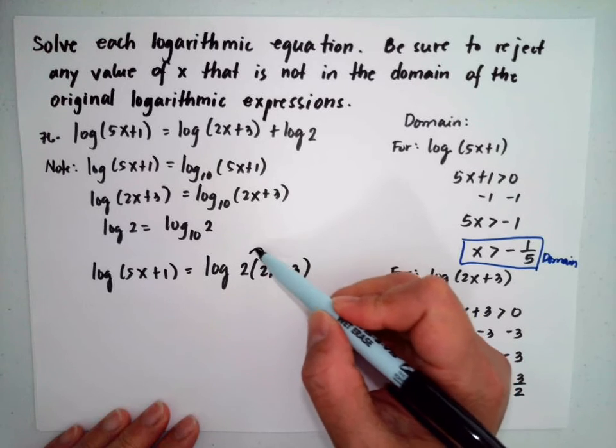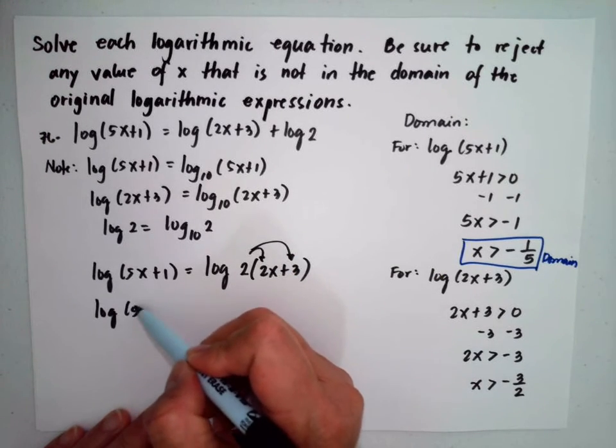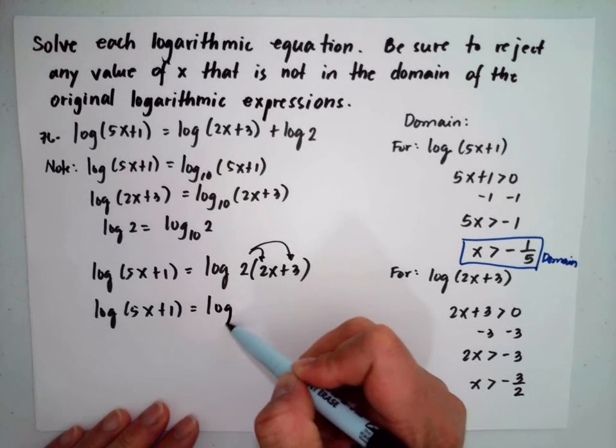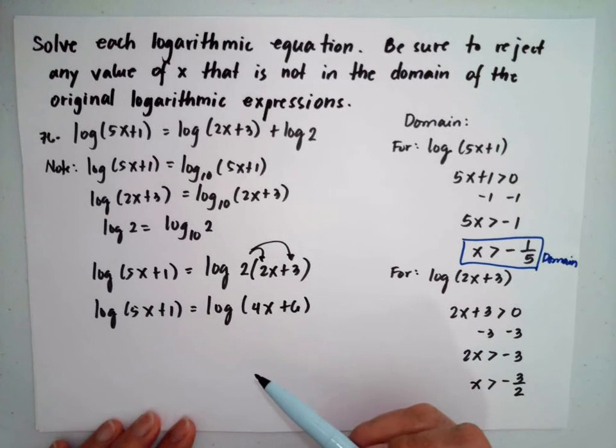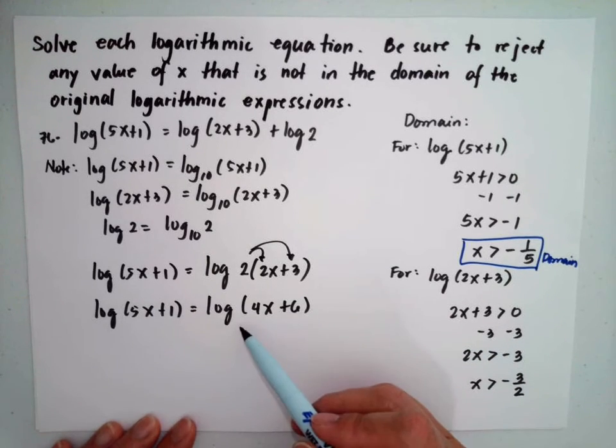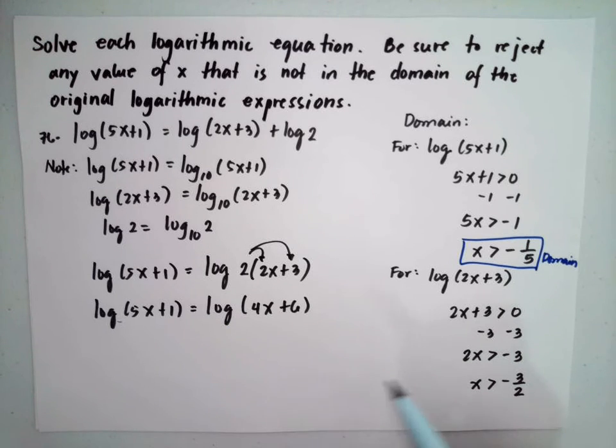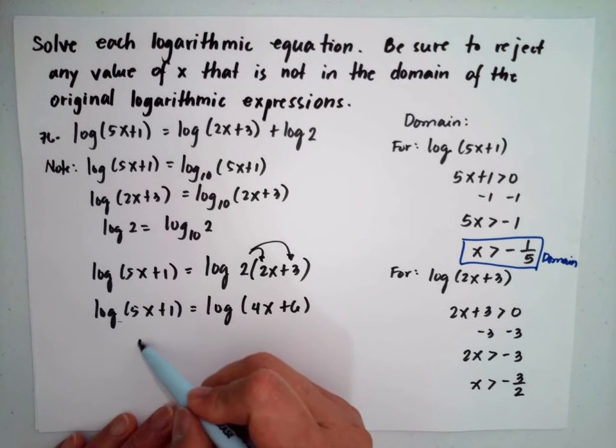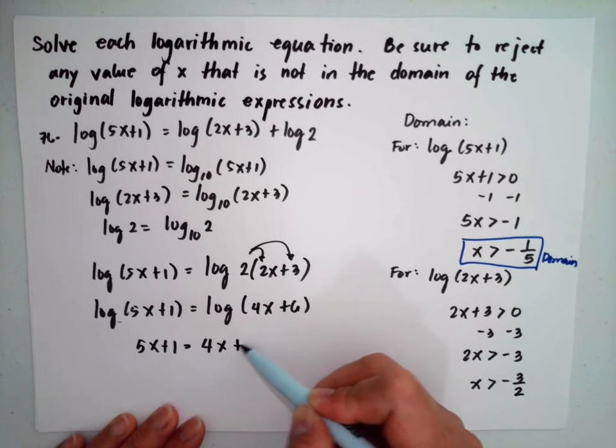Then distribute the 2 inside the parentheses. So log(5x+1) is log(4x+6). Now, since they have the same base and they are both logarithm in both sides of the equation, we can just say 5x+1 is equal to 4x+6.